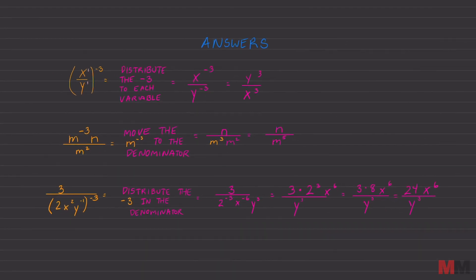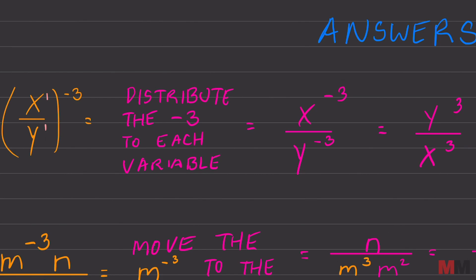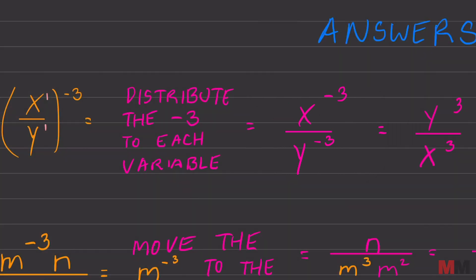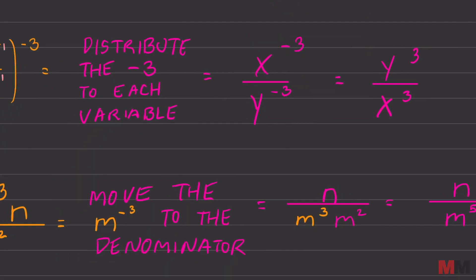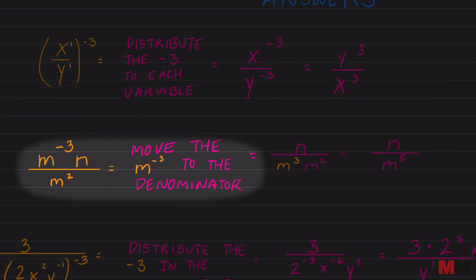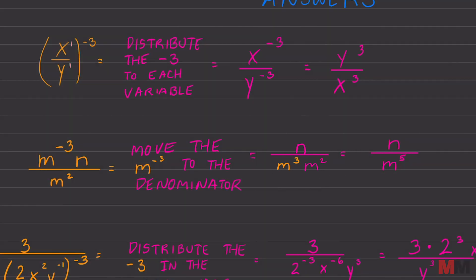Here are the answers for those 3 questions. Looking at the first one, you want to put ones on the x and y and you can distribute that negative 3. And you will get this. Both of those have a negative exponent. So you got to switch the x and y's position from top to bottom and bottom to the top. And you will get that answer right there. As far as the second question, only the m has the negative exponent. So you got to move that to the bottom. And once you have it at the bottom, just apply your rules of exponents, same base, add the exponents, and you will get this answer right here.